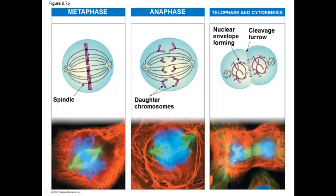Moving on from prophase is metaphase. This phase is very distinct because it's where each of the microtubules are equally tugging on the centromere of your duplicated chromosomes, and all of the chromosomes line up in the middle of the cell. There is an imaginary line called the metaphase plate — that's what I use to help remember which phase is the one where things line up.